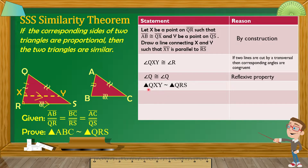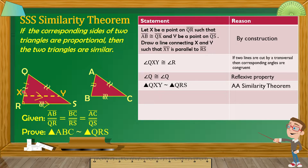Statement 4: Masasabi natin ngayon na si triangle QXY — itong maliit na triangle — ay similar kay triangle QRS, dito sa malaking triangle, by AA Similarity Theorem. Kasi napakita natin na itong angle Q, by reflexive property, ay congruent sila. At itong angle X dito, or angle QXY, ay congruent dito sa angle R by the transversal. Dalawang angle na congruent — so by AA Similarity Theorem, masasabi natin na QXY at QRS ay similar.